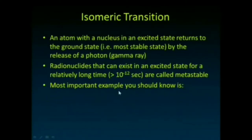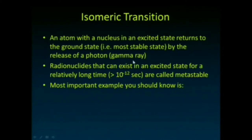Let's talk about how some of these decay schemes actually work in radioactive decay. Some atoms have nuclei that can exist in an excited state. Most nuclei that end up in an excited state as part of radioactive decay immediately go back to a ground state and don't exist in that metastable state for very long. When they decay to that ground state, they release a gamma ray photon from the nucleus as that atom goes from the excited state down to its ground state.